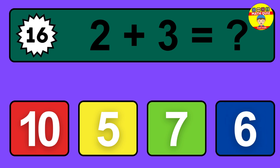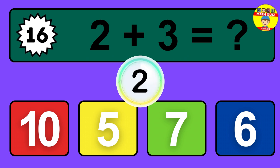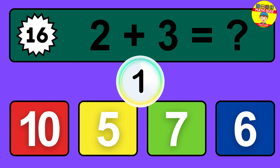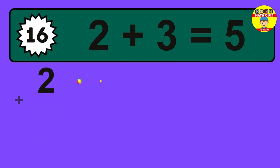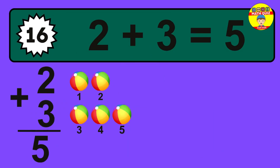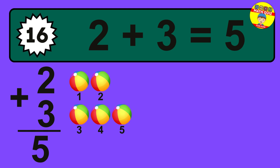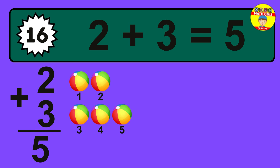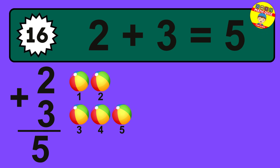Question 16. 2 plus 3 equals what? The answer is 2 plus 3 is 5. Let's count it: 1, 2, 3, 4, 5.